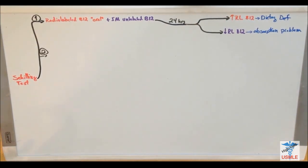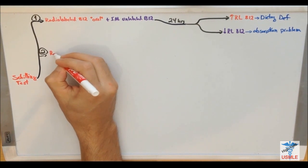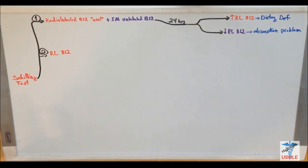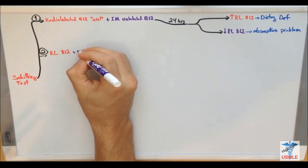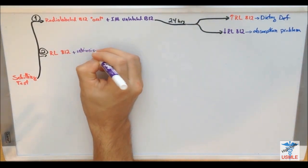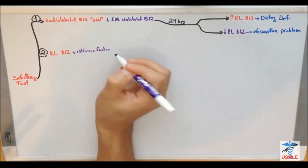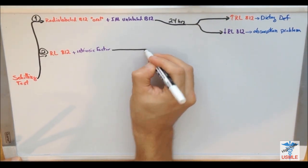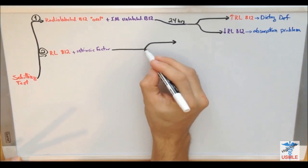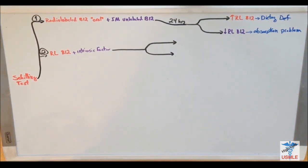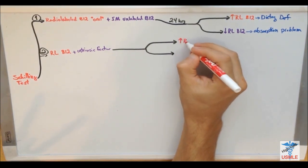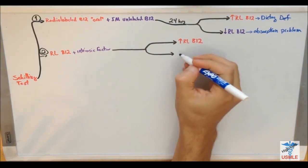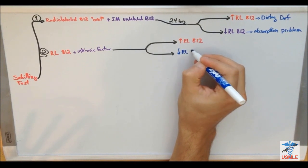This was stage 1. It's to, again, give the patient radio-labeled B12. Now this time, you want to give them intrinsic factor. So, plus intrinsic factor. Now, you wait for 24 hours, and you measure the urine. Now, again, two things can happen here. You can have, again, increase in radio-labeled B12, or you can have decreased radio-labeled B12 in the urine.